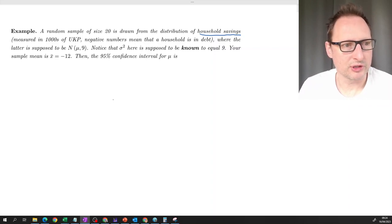And we assume for this problem that the distribution of household savings is normally distributed with a known variance of nine. So variance of nine thousand pounds, that would be a standard deviation of three thousand pounds. And we are drawing a random sample of 20. So N is equal to 20 here.